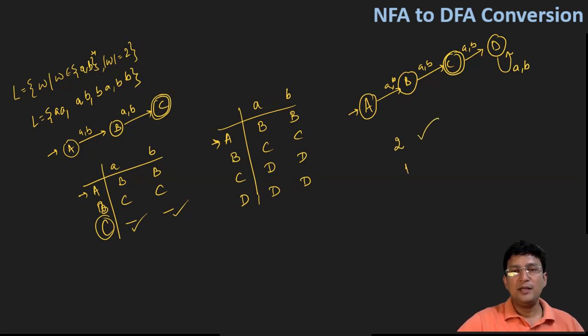And any other length string, maybe zero or one or three or five or something like that, all those length strings should be rejected by this automata. So this is the simple conversion of the NFA to DFA. We'll take up more examples in the subsequent lectures. Thanks for watching.